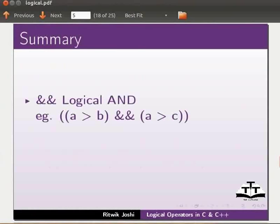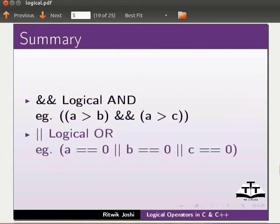Let us now summarize this tutorial. In this tutorial, we learnt about logical AND. Example A greater than B and A greater than C. Logical OR. Example A equals equal zero or B equals equal zero or C equals equal zero.